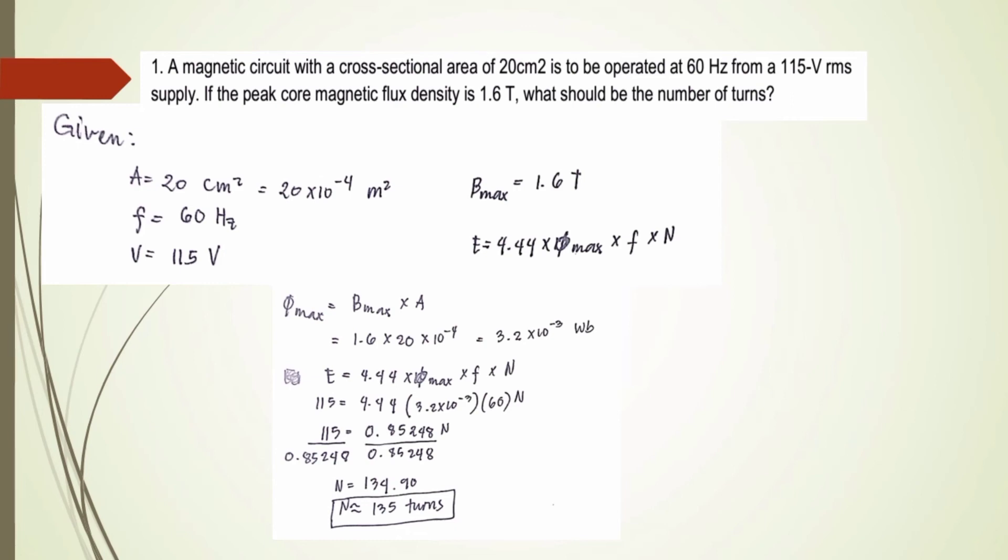So for flux density, we have 1.6 times... we have 1.6 times 20 times 10 raised to negative 4, so we have 3.2 times 10 raised to negative 3 weber. So we will just consider that our induced voltage.